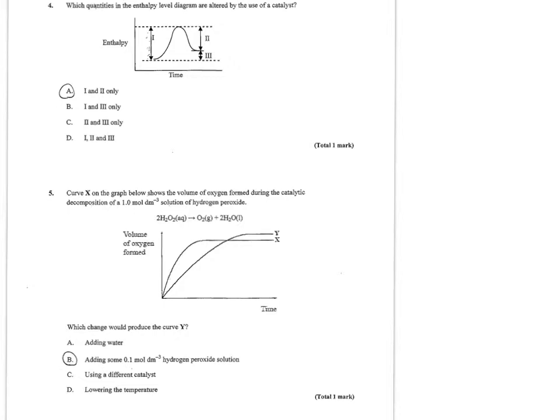Number 5 was a little tricky. Curve X on the graph shows the volume of oxygen formed during catalytic decomposition of 1 molar hydrogen peroxide. You can see it's got a nice fast rate and nice long equilibrium plateau.